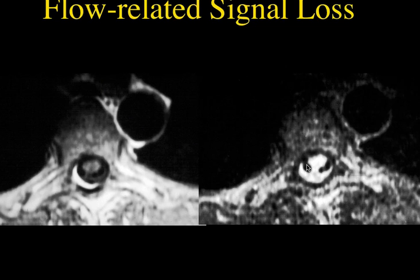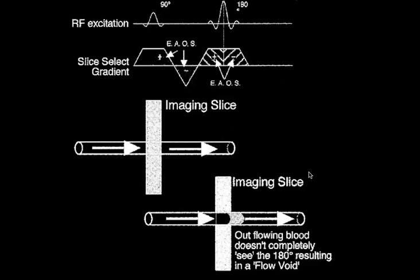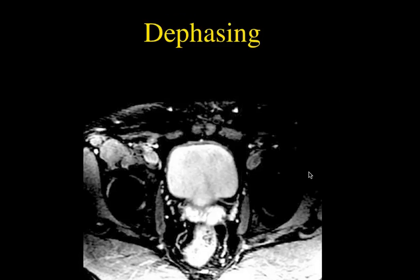If flow is too rapid, so that the nuclei don't see all of the pulses necessary to produce a signal, or if flow is too turbulent and mixes up the nuclei, you can get areas of flow-related signal loss. Here is an example of turbulent flow in the CSF around the cord, where it looks almost like flow voids as you might see with a large venous malformation — but this is just due to flow-related signal loss within the CSF around the cord.